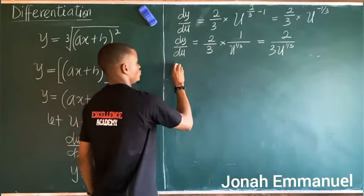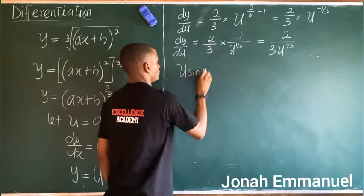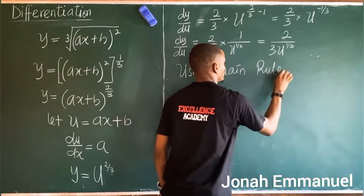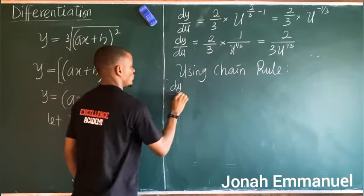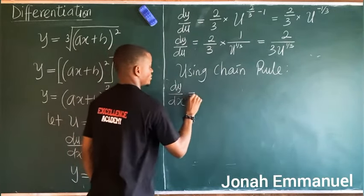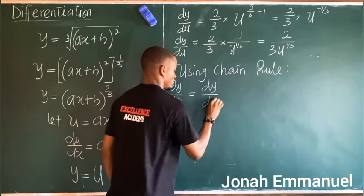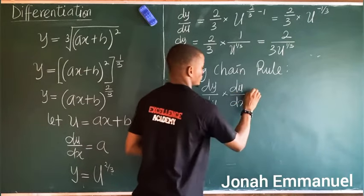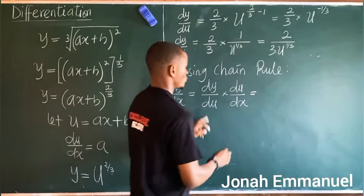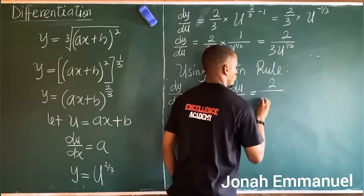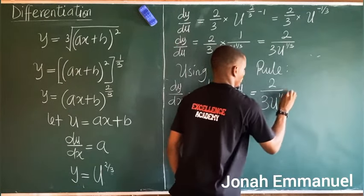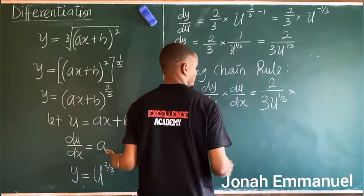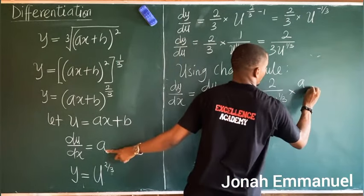Recalling the chain rule formula: dy/dx equals dy/du times du/dx. Substituting in, dy/dx equals two over three u to the power one over three, times a.